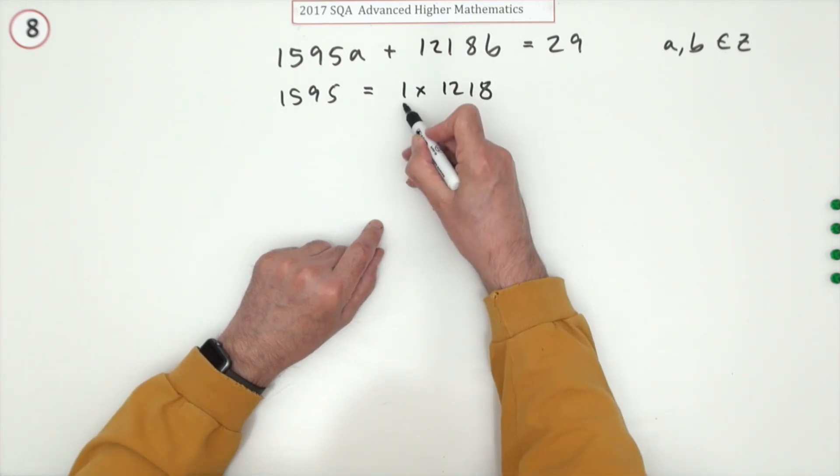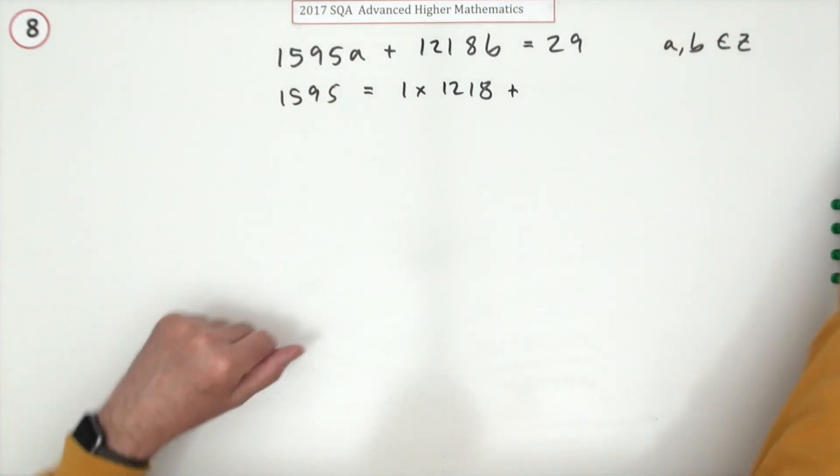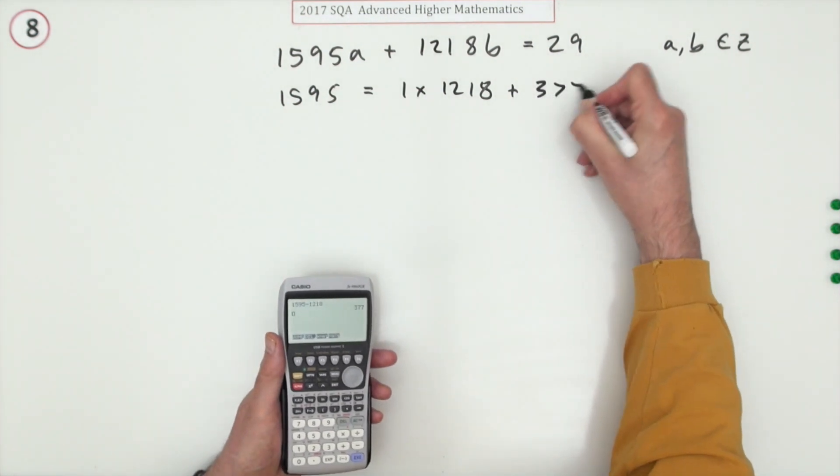It's more whether it goes in exactly or not. If it doesn't go in exactly, it's this part I want plus what's left over. Now you start using your calculator, so the first part is 377.